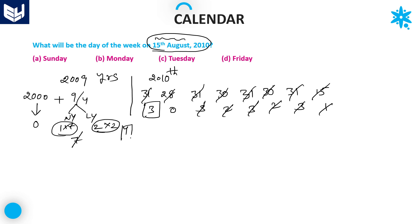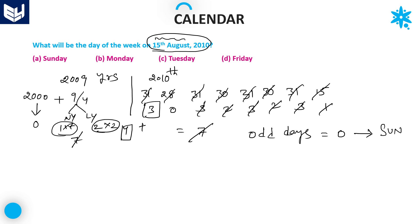Left-hand side value is 4 and right-hand side value is 3. So 4 + 3 = 7, which is exactly 1 week. Therefore, the number of odd days is 0. When odd days are 0, that day is Sunday. Option A is the right answer. I hope you enjoyed the session — thank you very much for watching.